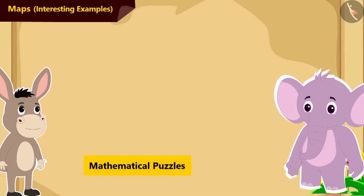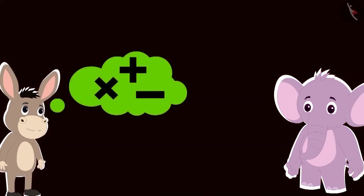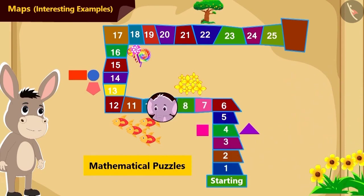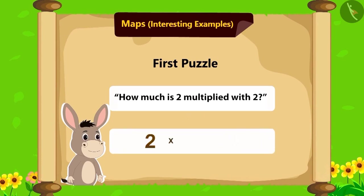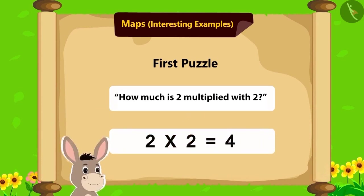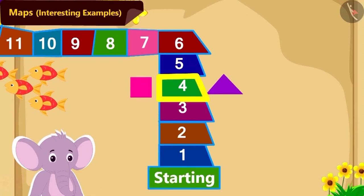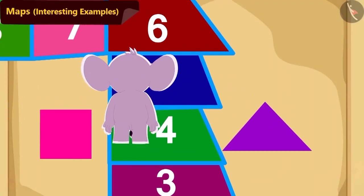Bholla and Appu are playing a game. Bholla has made a map on the floor and will ask Appu some mathematical puzzles. Appu has to find the solution and then walk over the map to reach the tile containing the answer. Bholla's first puzzle is: what is two multiplied with two? Yes, two multiplied with two is four. By walking four steps straight, Appu has reached tile number four.